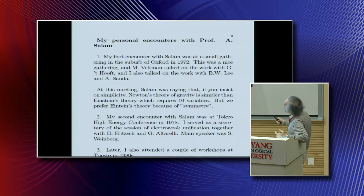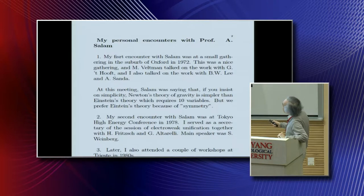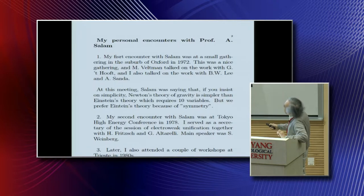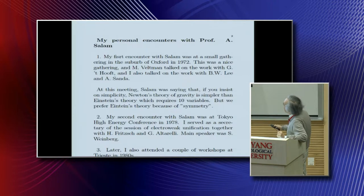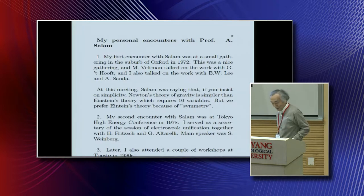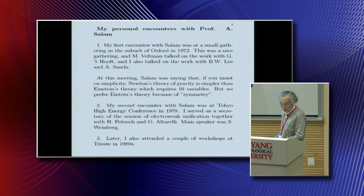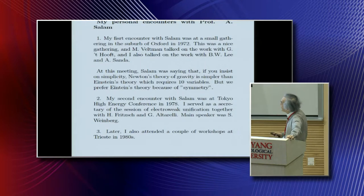I was a postdoc at Cambridge at that time. It was a nice small gathering in a nice old house. Tertman talked about work with Veltman and 't Hooft. I also talked about work with Benjamin Lee, who passed away when he was young. At this meeting, Salam was saying that if you insist on simplicity, then Newton's theory of gravity is much simpler than Einstein's theory, which requires ten variables. But we prefer Einstein's theory because of symmetry. So Salam was saying symmetry is really essential — superficial simplicity is not fundamental, but symmetry is more important.